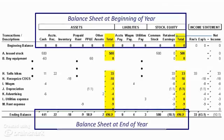The beginning balances in all the asset, liabilities, and stockholders' equity accounts is essentially the balance sheet at the beginning of the year. And then after having a year's worth of transactions, the ending balances in all those columns simply becomes the balance sheet at the end of the year.